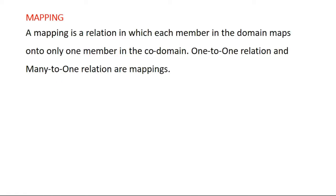In the previous video we looked at Relations. In this video we are going to look at Mapping. So what is a Mapping? A Mapping is a relation in which each member in the domain maps onto only one member in the co-domain. Based on this definition we can say that one-to-one relations and many-to-one relations are mappings.